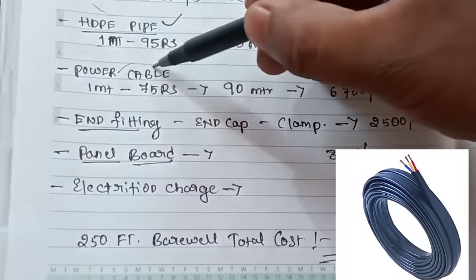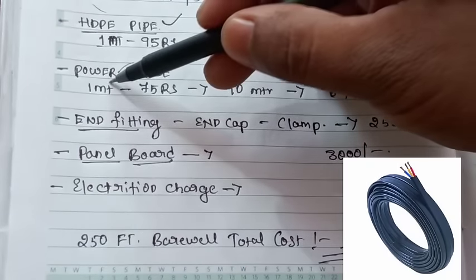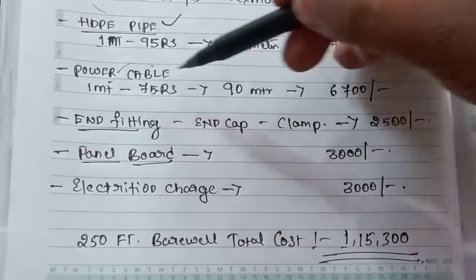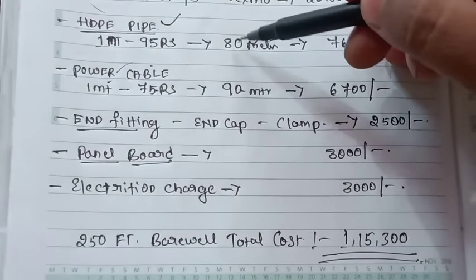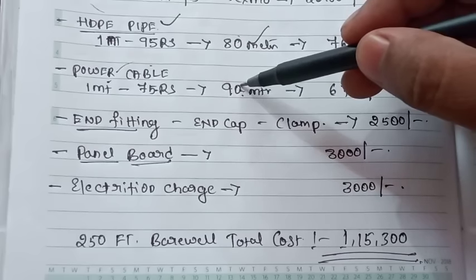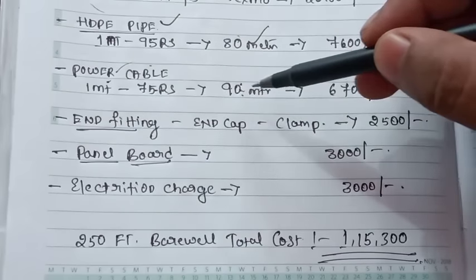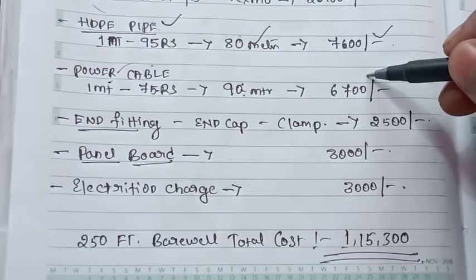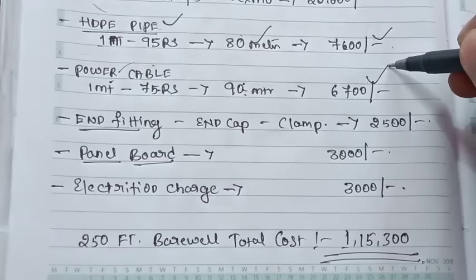There is a power cable that costs 65 rupees per meter. For 90 meters, from the pipe to the nearby panel board, the total is about 6,700 rupees.